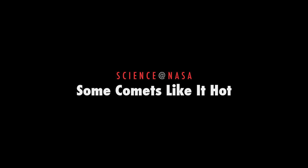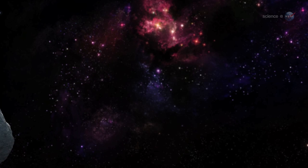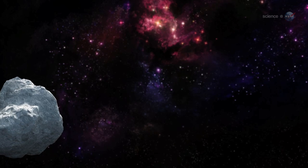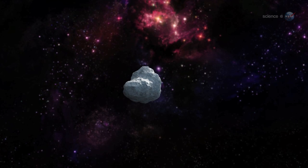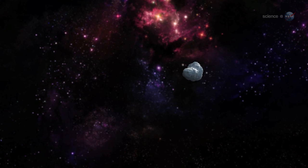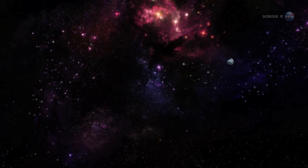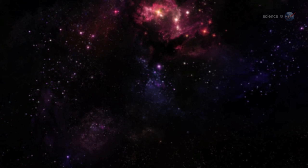Some Comets Like It Hot, presented by Science at NASA. Comets are icy and fragile. They spend most of their time orbiting through the dark outskirts of the Solar System, safe from the withering depredations of intense sunlight. Their natural habitat is the deepest cold.